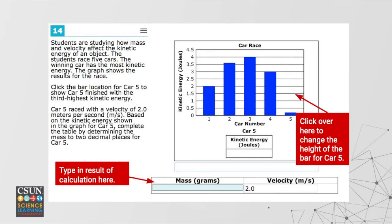A different type of question involves graphs of velocity and kinetic energy. In this one, you have to actually move the bar graph — you can click on card number five and set the height of the bar graph to the appropriate height, and you can type in the calculated result.